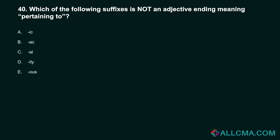Question 40: Which of the following suffixes is not an adjective ending meaning 'pertaining to'? a) -ic, b) -ac, c) -al, d) -ity, e) -us. Correct answer: D, -ity. The suffix -ity means condition, not pertaining to.